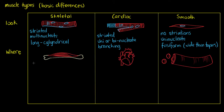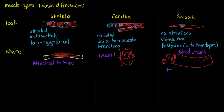Now, where do we find each muscle type? Skeletal muscle is attached to bone — acting on bones as levers. Cardiac muscle is found within the heart. Smooth muscle is found within blood vessels and on the walls of essentially all our hollow organs: the stomach, intestines, esophagus, and most blood vessels.